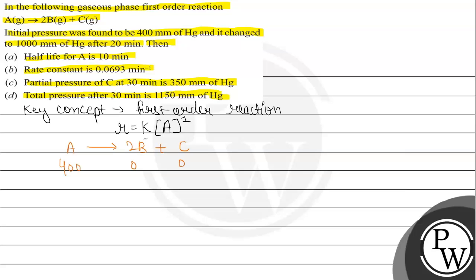And after that we can see 2B and C formation. So we can let 2x and x make some amount. So it will be 400 minus x which we have here, that was at time 0. And for this time we have 20 minutes. Now we have total pressure given after 20 minutes that is 1000 mm of Hg.